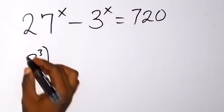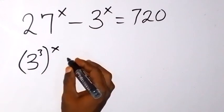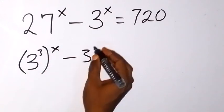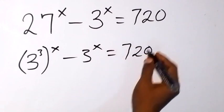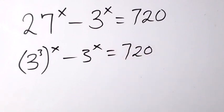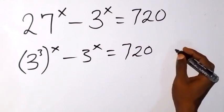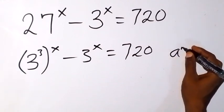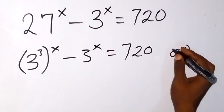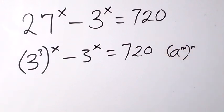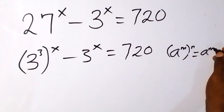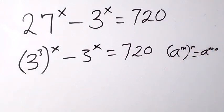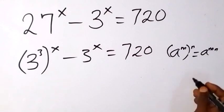We have 3 raised to power 3, then raised to power x, minus 3 raised to power x, equals 720. Now when we apply the law of indices: when we have something of the form a raised to power m, then raised to power n, we can write this as a raised to power mn, because the powers multiply.